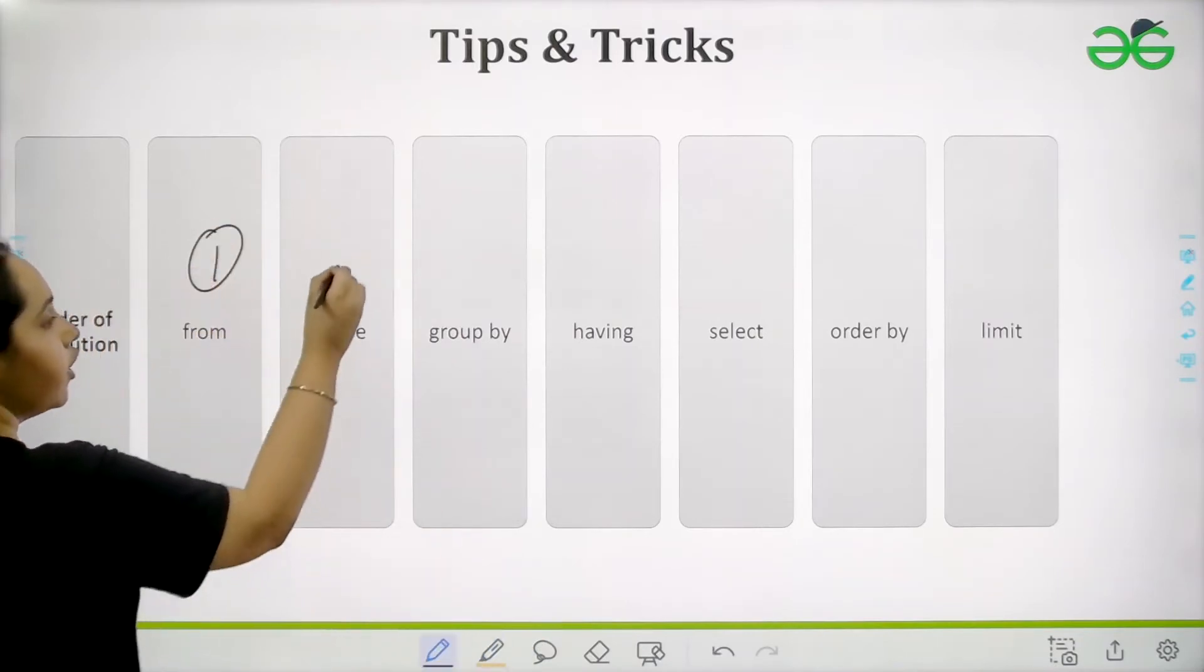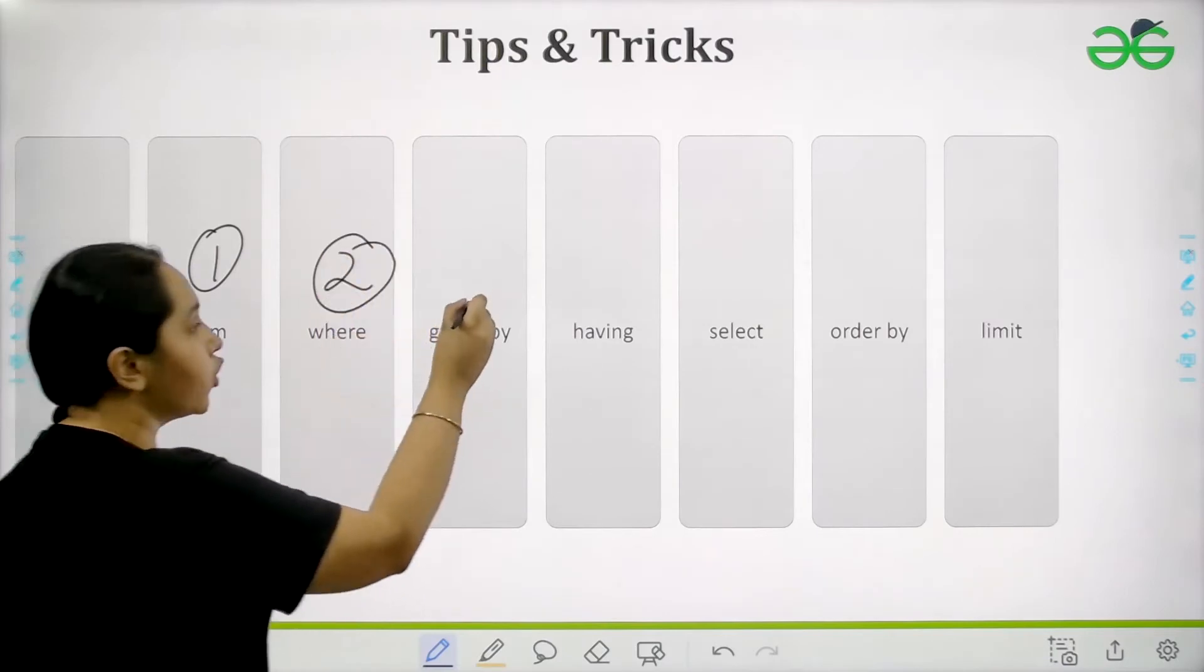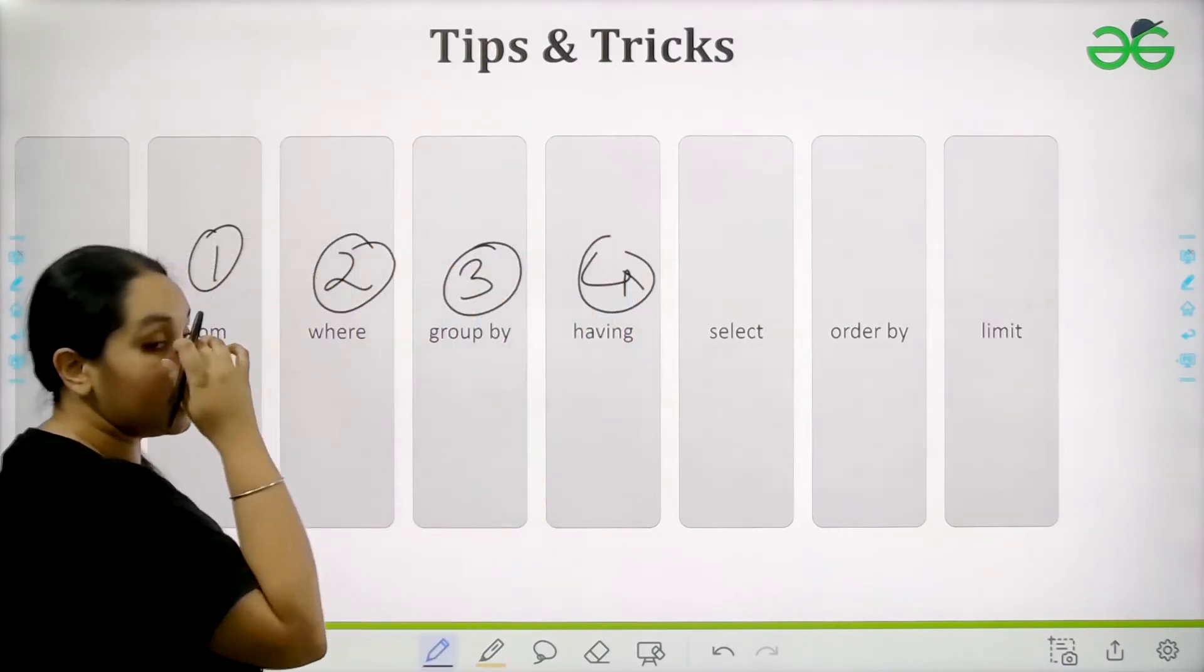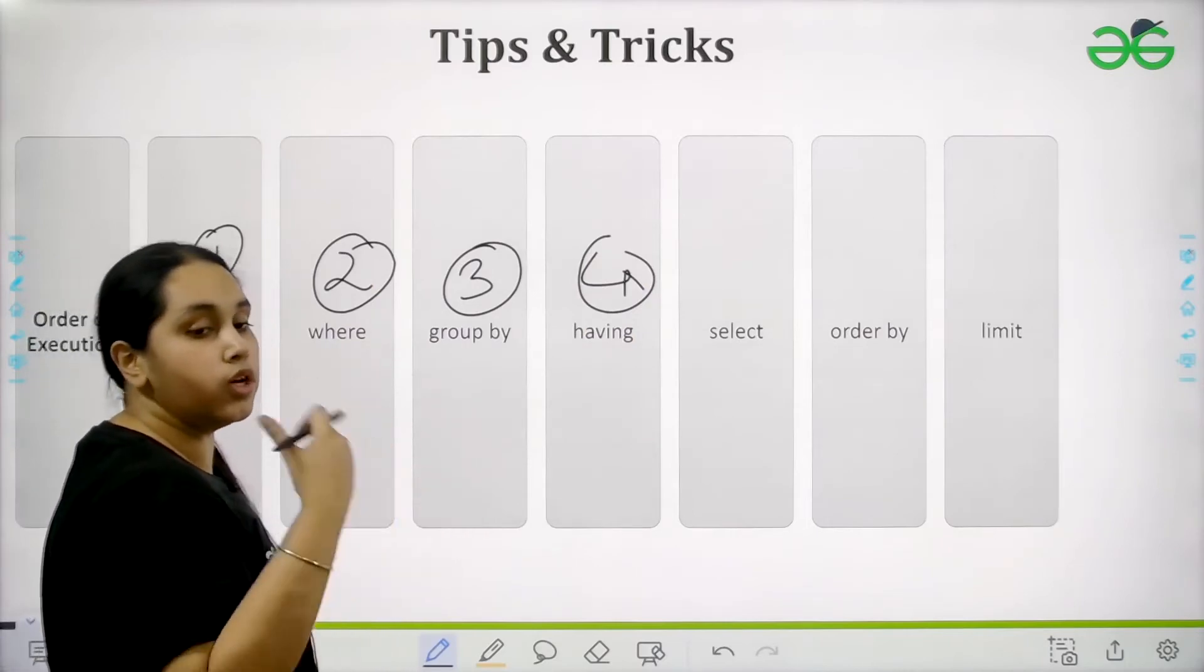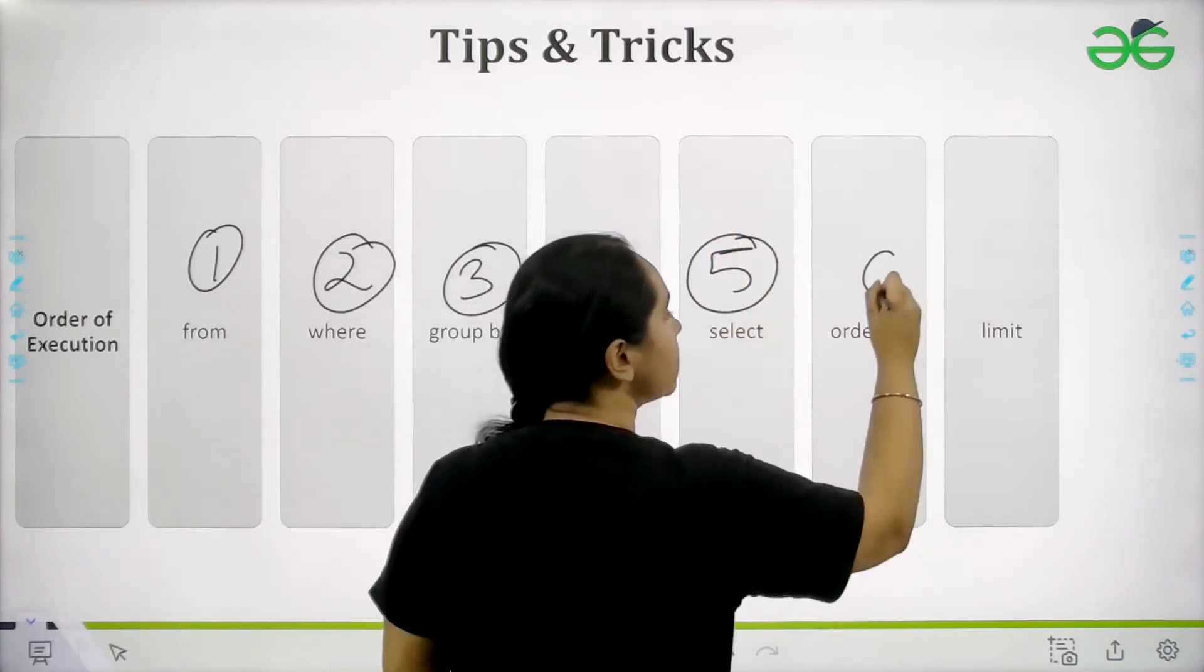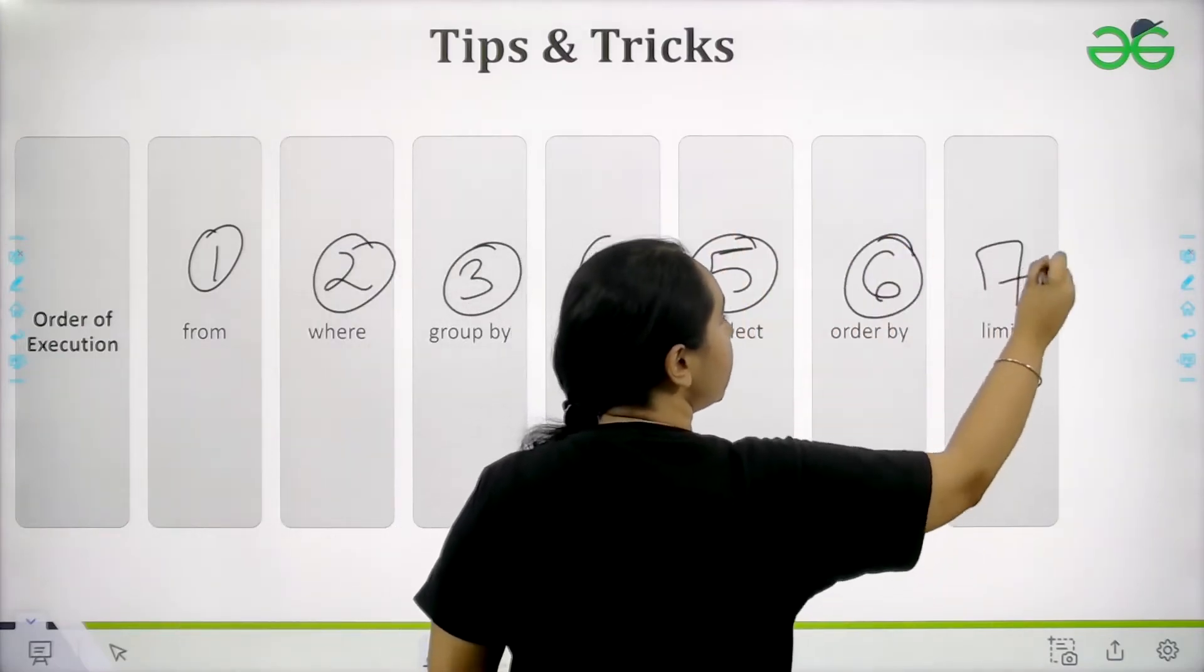FROM is first. WHERE is second. GROUP BY is third. HAVING is fourth. You need to execute these commands. Fifth is SELECT. Sixth is ORDER BY. And seventh is LIMIT.